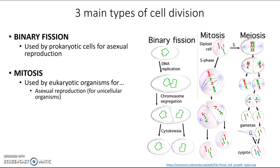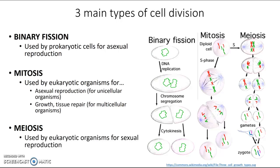But for multicellular organisms such as ourselves, we use mitosis for growth and tissue repair. The last type of cell division is meiosis, and this is used by eukaryotic organisms only for sexual reproduction — specifically for making gametes, or eggs and sperm. We're going to come back to meiosis in a few weeks, but for now we'll focus briefly on binary fission and then spend the next couple of classes on mitosis.